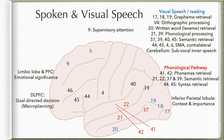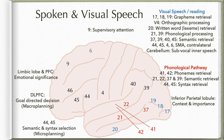Then the information is processed by the dorsolateral prefrontal cortex, where a goal-directed decision is made — this is called macroplanning. The brain decides, based on what we are hearing or reading, whether we should take any action and respond back. If the decision is yes, it sends information to Broca's area (44-45), where the appropriate words and syntax are selected to make a sentence — semantic and syntax selection. This is the microplanning.